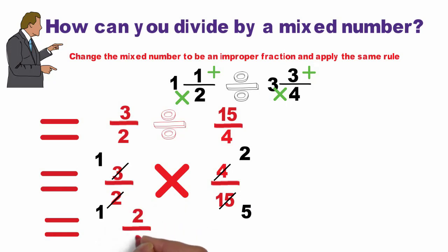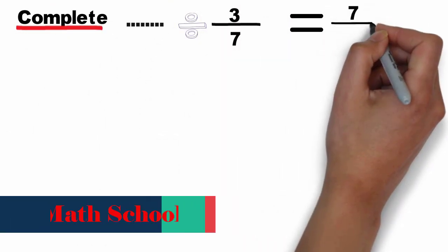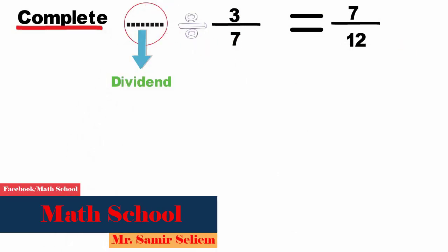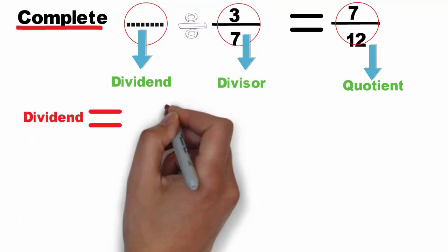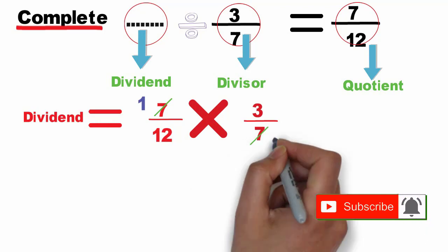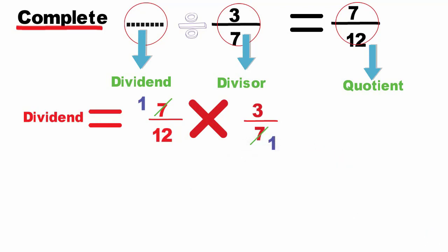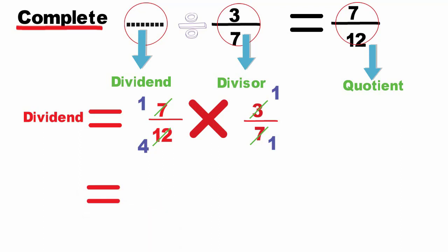Example: complete — what number divided by 3 over 7 equals 7 over 12? The first number is the dividend, the second is the divisor, and 7 over 12 is the quotient. To find the dividend, multiply the quotient by the divisor: 7 over 12 times 3 over 7. Cancel: divided by 7 equals 1, divided by 7 equals 1, and divided by 3 equals 1, divided by 3 equals 4. Multiply remaining factors: 1 over 4. If you like my video, subscribe to my channel. Thank you for watching — see you soon!